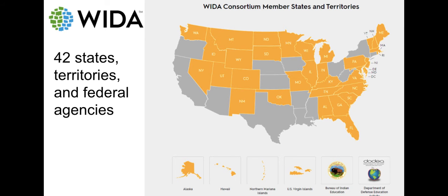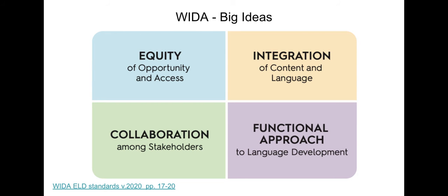This is also true of the WIDA framework. WIDA is a collaborative consortium of 41 states, territories, and agencies that provides the standards and assessments for multilingual learners in member states, including Minnesota. I want to emphasize the four big ideas of the framework, as seen on this slide. We will be addressing these throughout this course sequence.